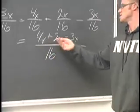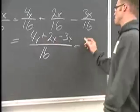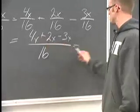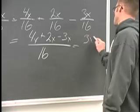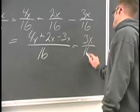All we have left to do is this addition and subtraction on top. 4x plus 2x gives us 6x, minus 3x gives us 3x on top and 16 on the bottom.